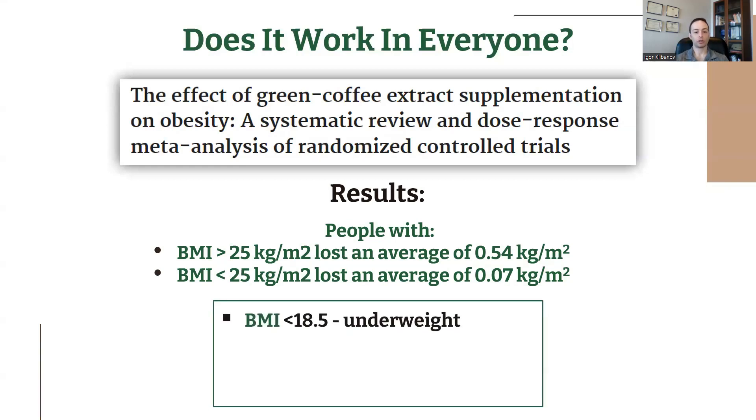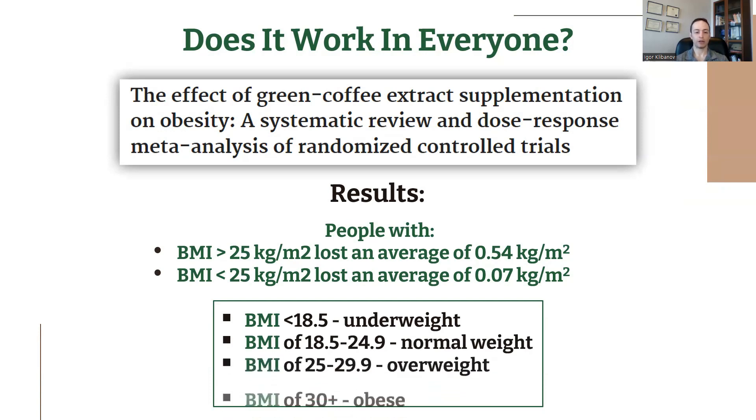A BMI of under 18.5 is considered underweight. A BMI of 18.5 to 24.9 is considered normal weight. A BMI of 25 to 29.9 is considered overweight, and anything over 30 is obese. So that gives you some context in terms of who it works for. Again, it works for you if you're overweight or obese, but it doesn't work for you if you're of normal weight.